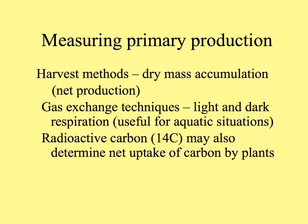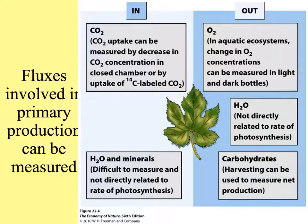How do plant ecologists measure primary production? You can simply harvest plant biomass and dry it out — that measures net primary productivity. People also use gas exchange techniques, looking at how much gas is released in light and dark situations. Another way is to use radioactive carbon to determine how much carbon is taken up by plants. For terrestrial studies, a common method is measuring carbon uptake using little chambers around leaves. In aquatic systems, people often measure O2 evolution using light bottles and dark bottles that don't let in sunlight.